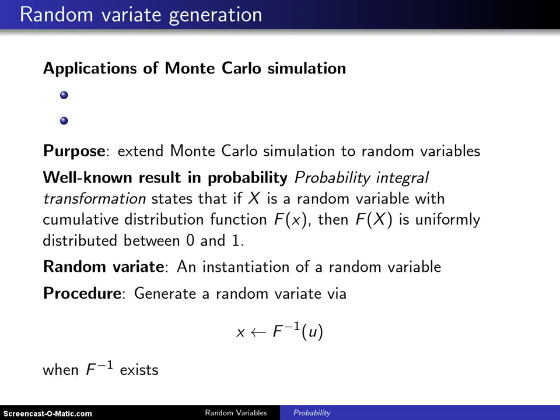Under the general topic of cumulative distribution functions, the first subtopic was percentiles and we are done with those. The second subtopic is random variate generation.